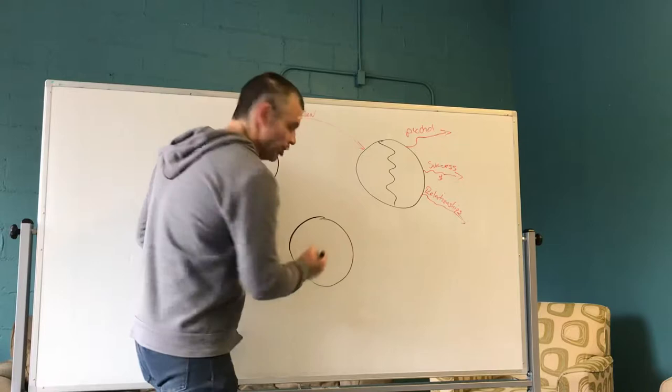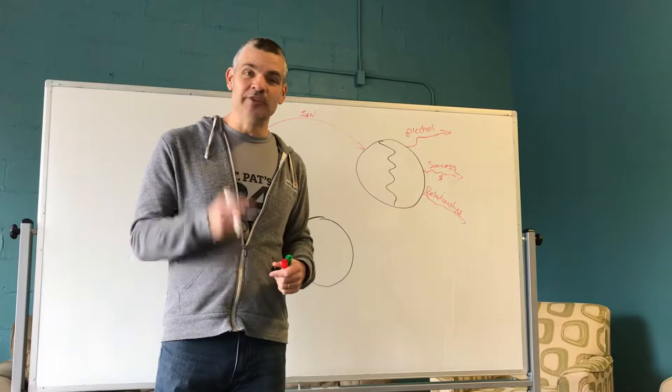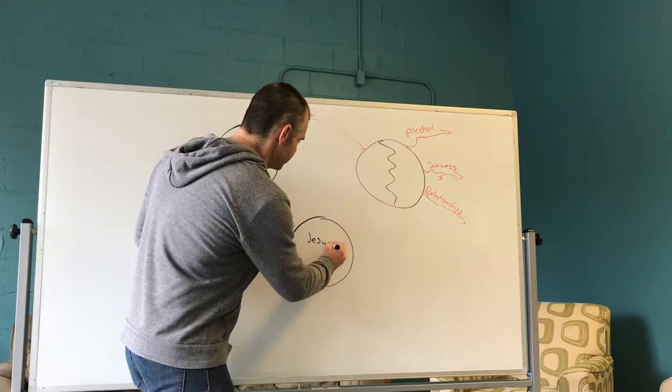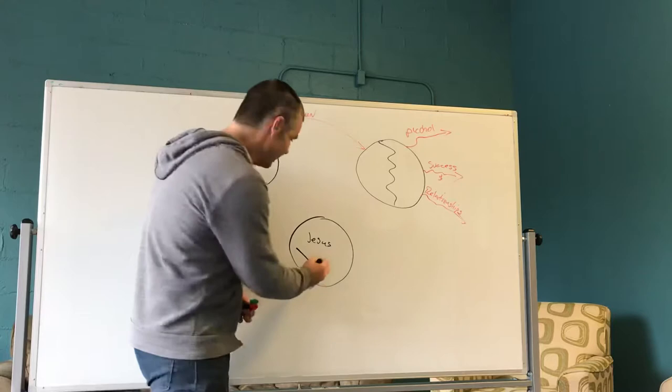And so God's plan was to send his son. You know, you can send somebody a letter or a postcard if you want to communicate. You can send a text or you can make a phone call. But if you really want to solve a problem, you send a person. And so God sent a person named Jesus, his one and only son. And Jesus came from heaven to earth. He led the perfect life. And then he died a terrible death on a cross.